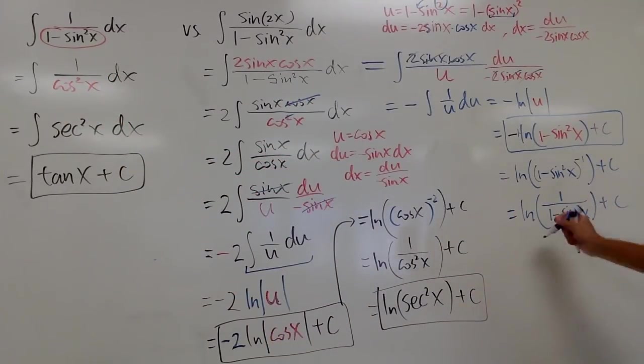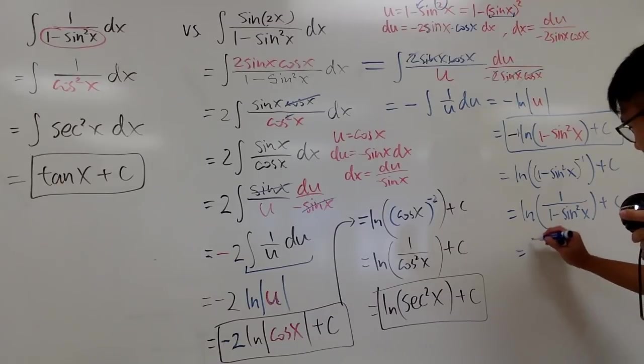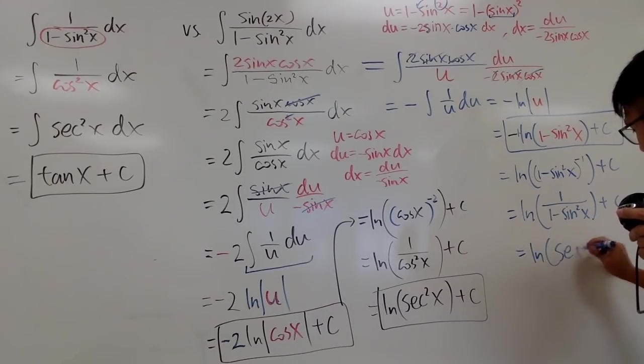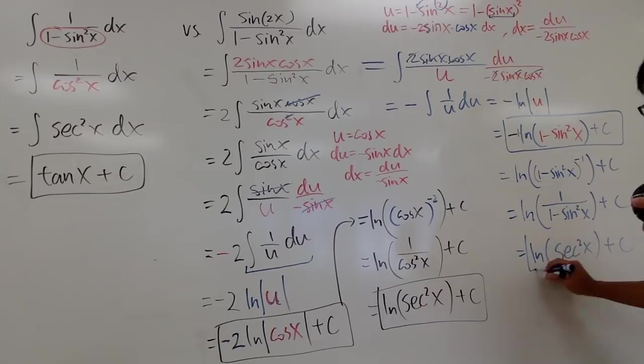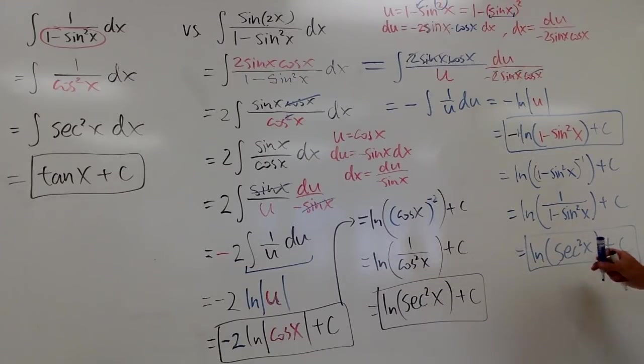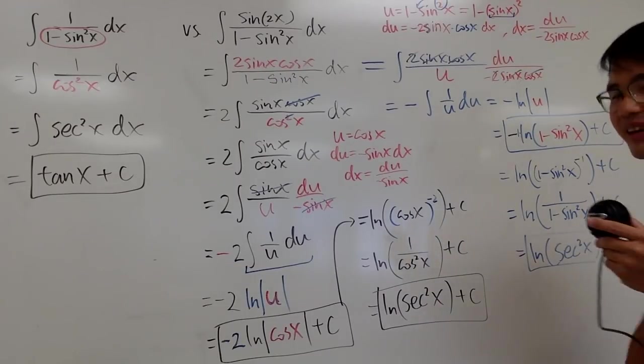So I will just write this down as ln of secant squared x, plus C. So either way, we end up with the same answer.